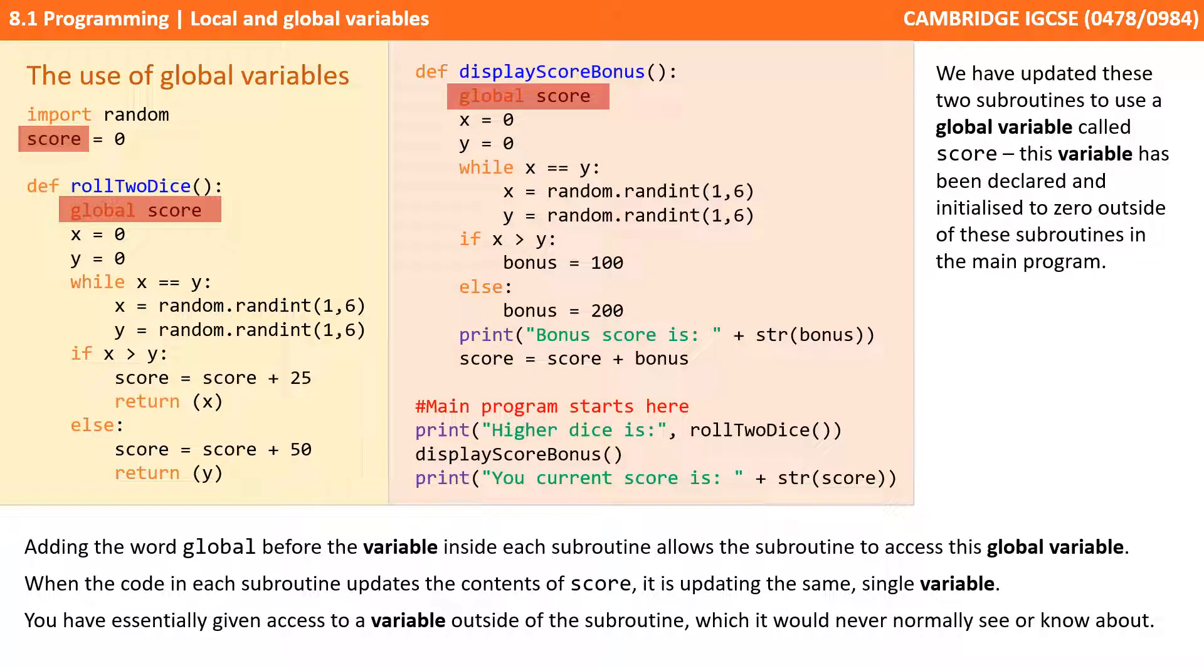Adding the word global in Python before the variable inside each subroutine allows the subroutine to access this global variable. When the code in each subroutine updates the contents of score, it's updating the same single variable.